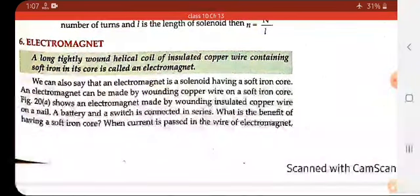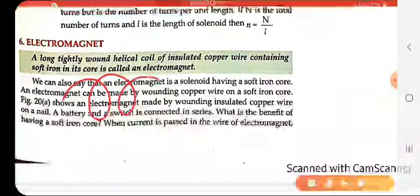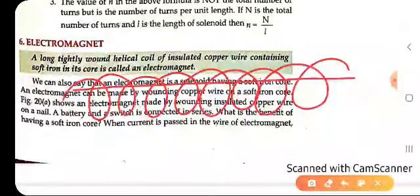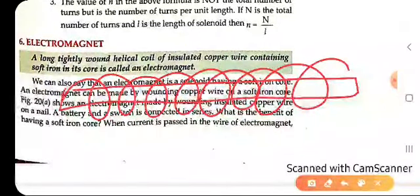It is a circular wire that is wrapped around the iron core. It is an insulated copper wire which is wrapped around a soft iron core. The core is present in the center of the coil.